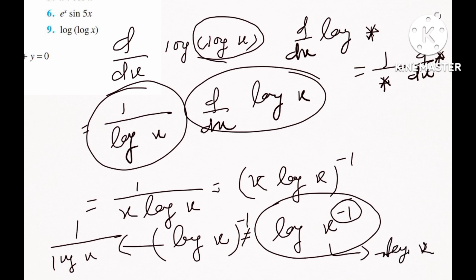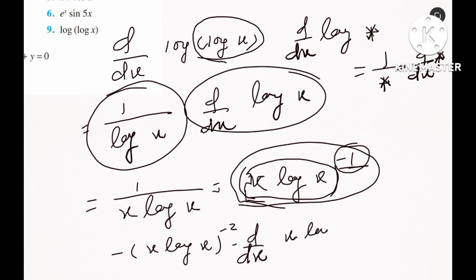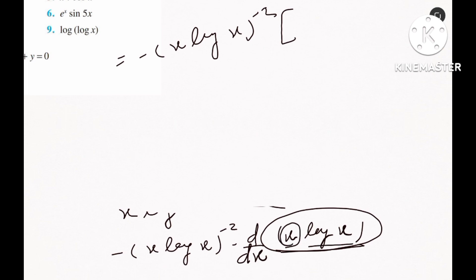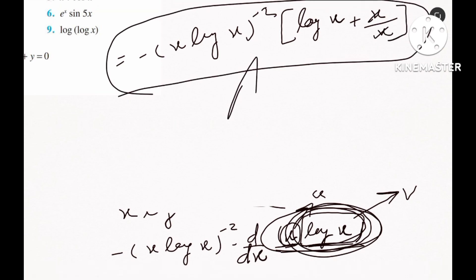Now rewrite 1 by (x log x) as (x log x) to the power minus 1 to find the second derivative. Using the power rule: bring minus 1 forward, giving minus (x log x) to the power minus 2, times the derivative of (x log x). The derivative of x log x by product rule: derivative of x is 1 times log x, plus x times derivative of log x which is 1 by x. This simplifies to log x plus 1. So the final second derivative answer is obtained.